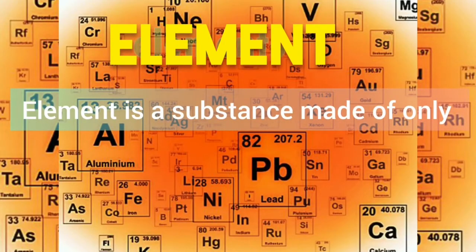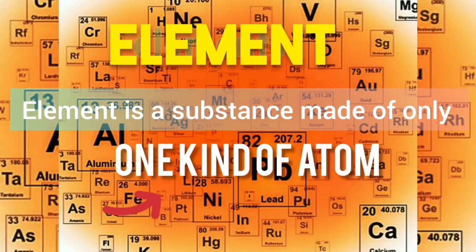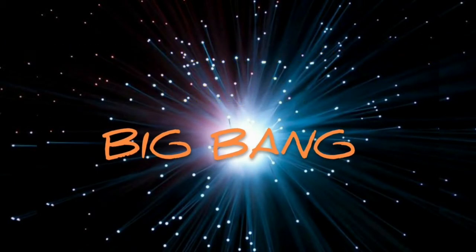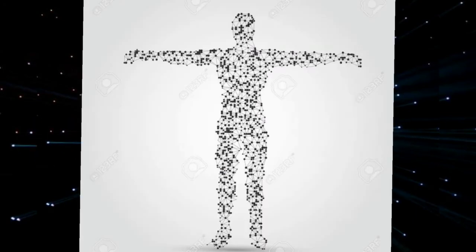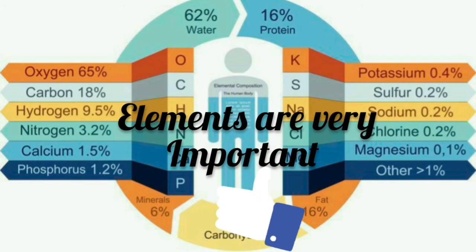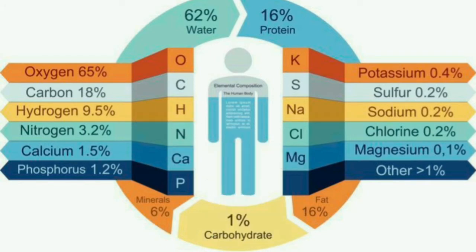Then what is an element? An element is a substance made of only one kind of atom. These elements were created long ago during the Big Bang, and these are the things that create everything, including us. As we can see in the picture, our human body consists of many kinds of elements. Elements are very important, and you have probably heard of many of them, like oxygen, carbon, hydrogen, nitrogen, calcium, and so on.